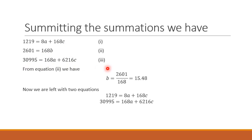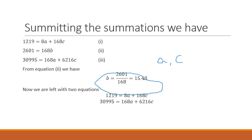From equation two we can estimate the value of b — we divide the whole equation by 168 to get the estimated value of b. We are then left with a and c to estimate. Using equations one and three together, we can estimate a and c by solving the two simultaneous equations using methods such as cross multiplication, substitution, or Cramer's rule.